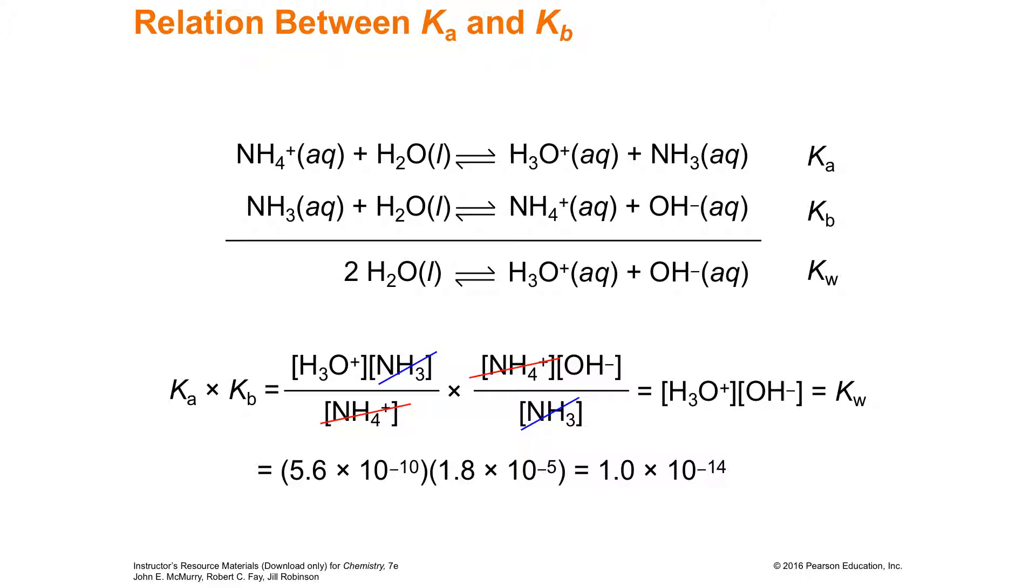Look at the second line. K sub B is simply the base constant of the conjugate base of the first line. So the conjugate base of the first, here's the acid. What's left over after you give a H plus away? The conjugate base is the ammonia.